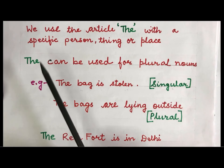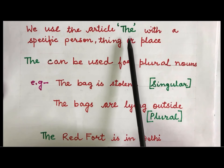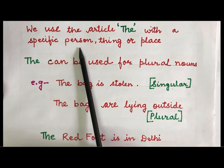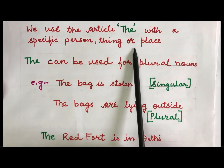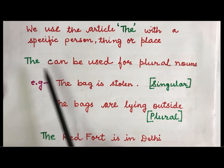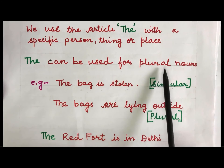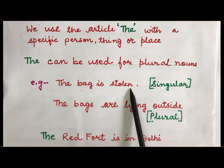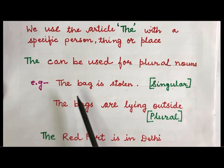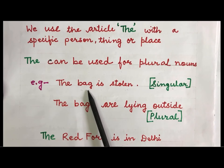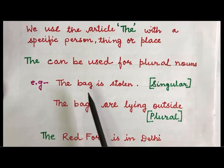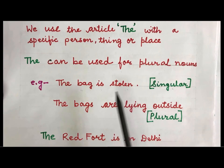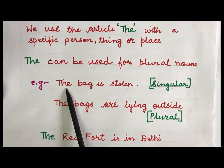Now we use the article the with a specific person, thing, or place. The can be used for plural nouns also. Let us see the example: the bag is stolen. Here bag is a singular noun and we are talking about that specific bag which is stolen, so we have written the article the here.